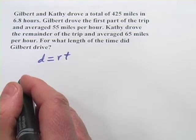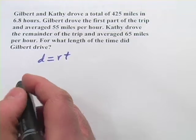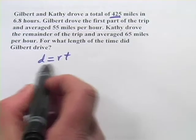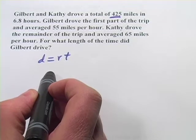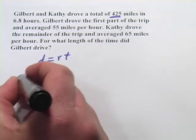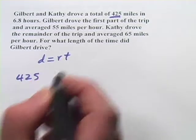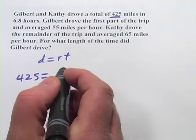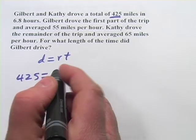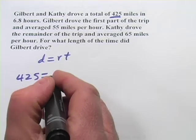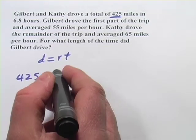One thing we have is the total distance. So let's try to set up a distance equals rate times time equation for that. The distance would be 425 miles. And since part of the time Kathy drove and part of the time Gilbert drove, we're going to separate those into two parts and add them together.